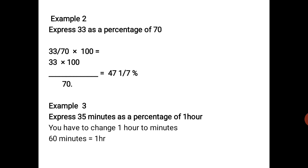Now let's look at the next one: express 35 minutes as a percentage of one hour. If you look at what we have here, the two terms are unlike terms — minutes cannot be placed under hours directly. So we need to change the hour to minutes so that they become like terms. We know that 60 minutes equals one hour, so we change one hour to 60 minutes.